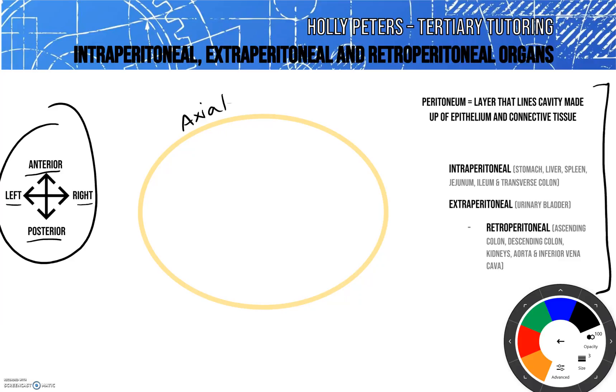The first one on the list is actually talking about what the peritoneum is. The peritoneum is a layer or lining on the inside of the cavity. It's made up of a combination of epithelium and connective tissue, and the way that it encapsulates an organ defines whether it falls into the intra or extraperitoneal category.